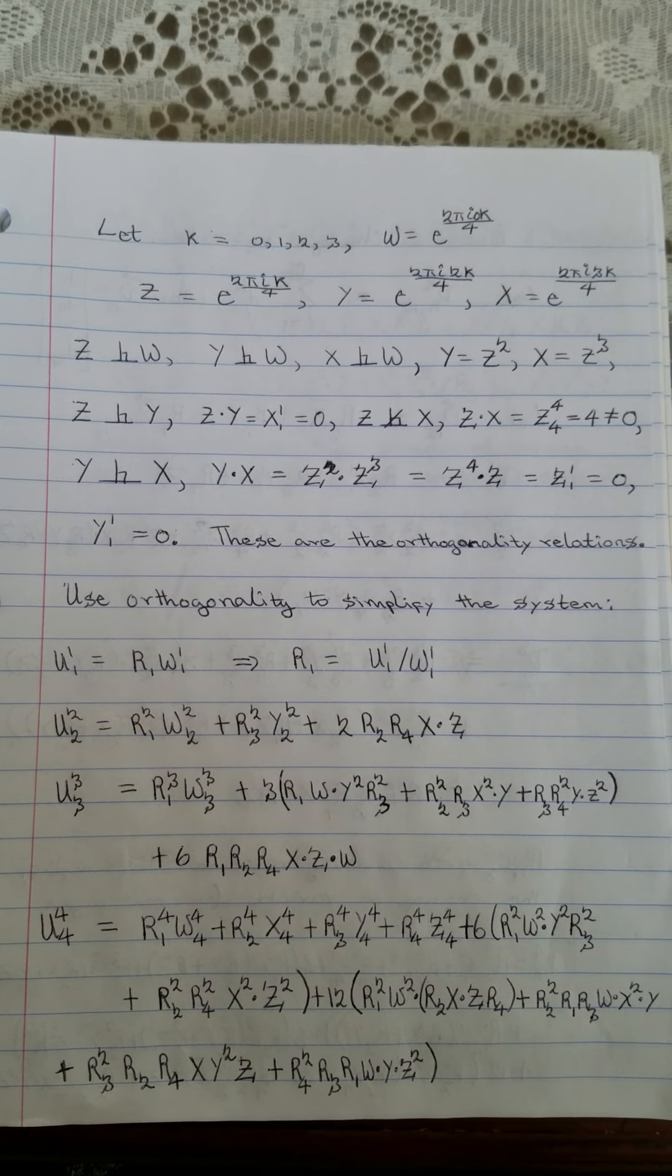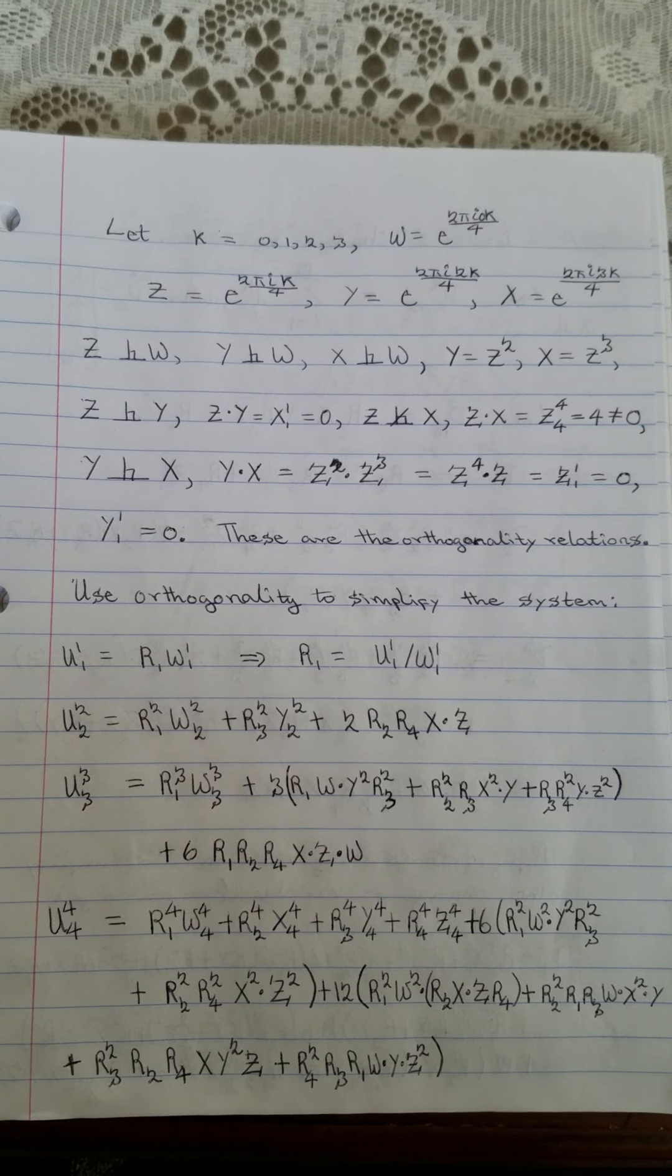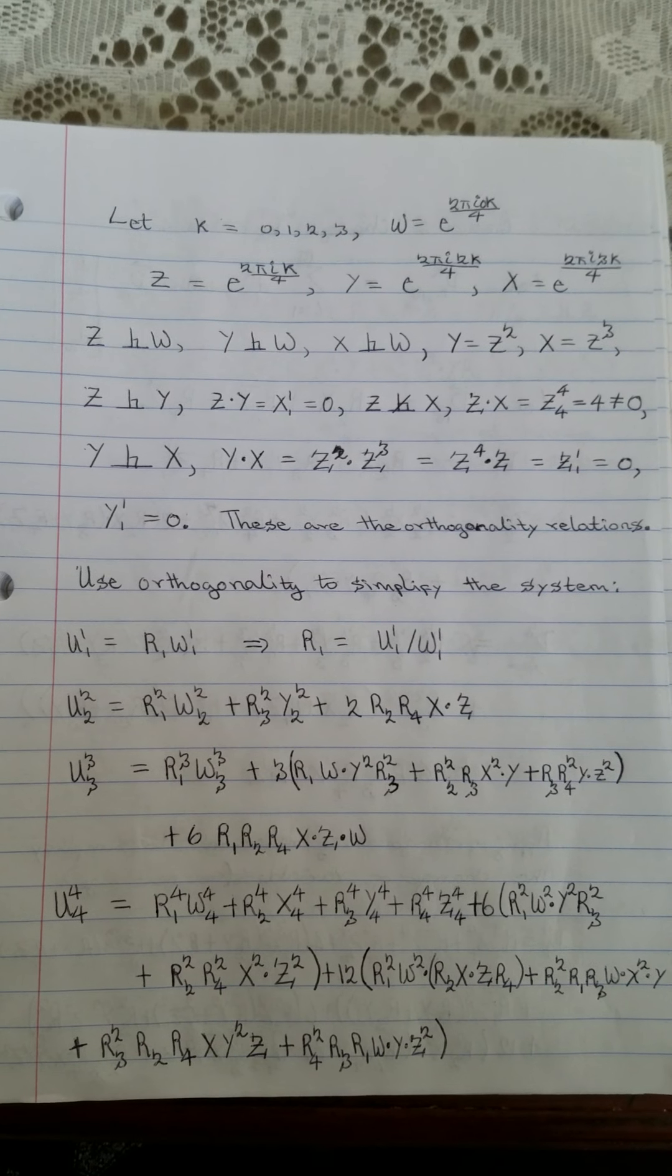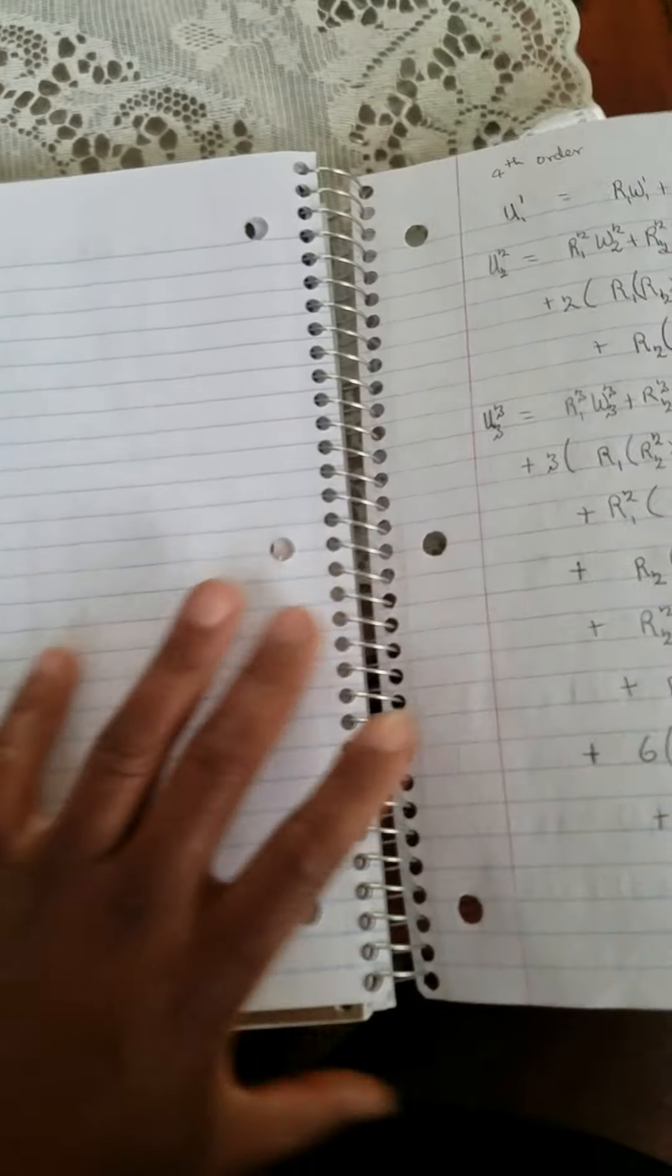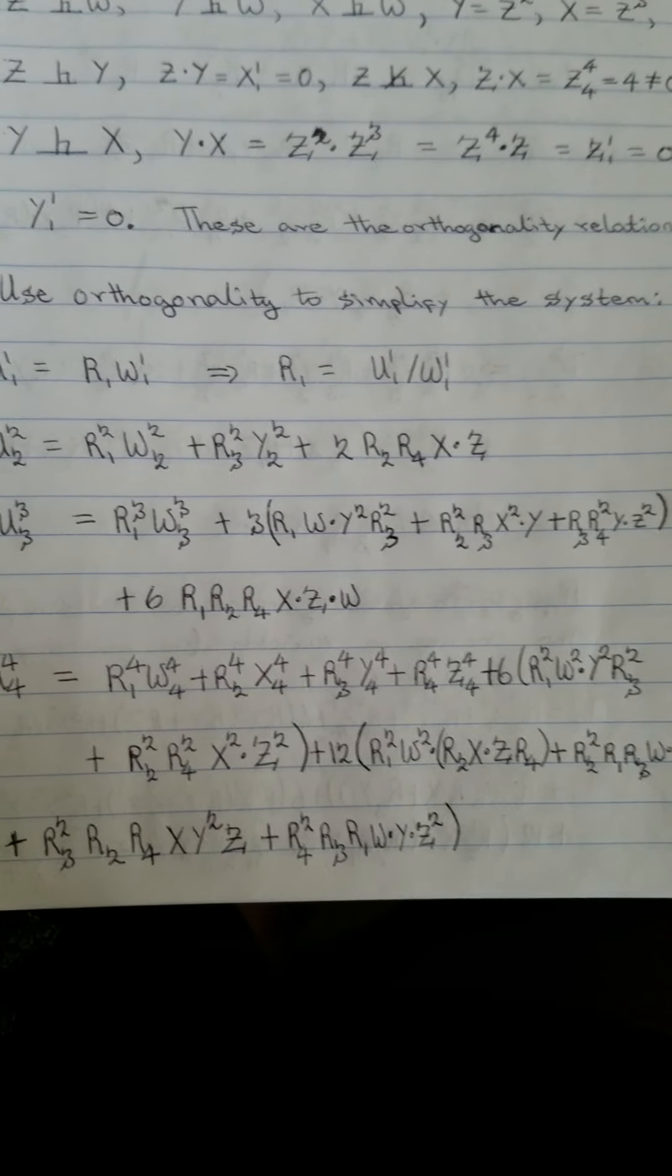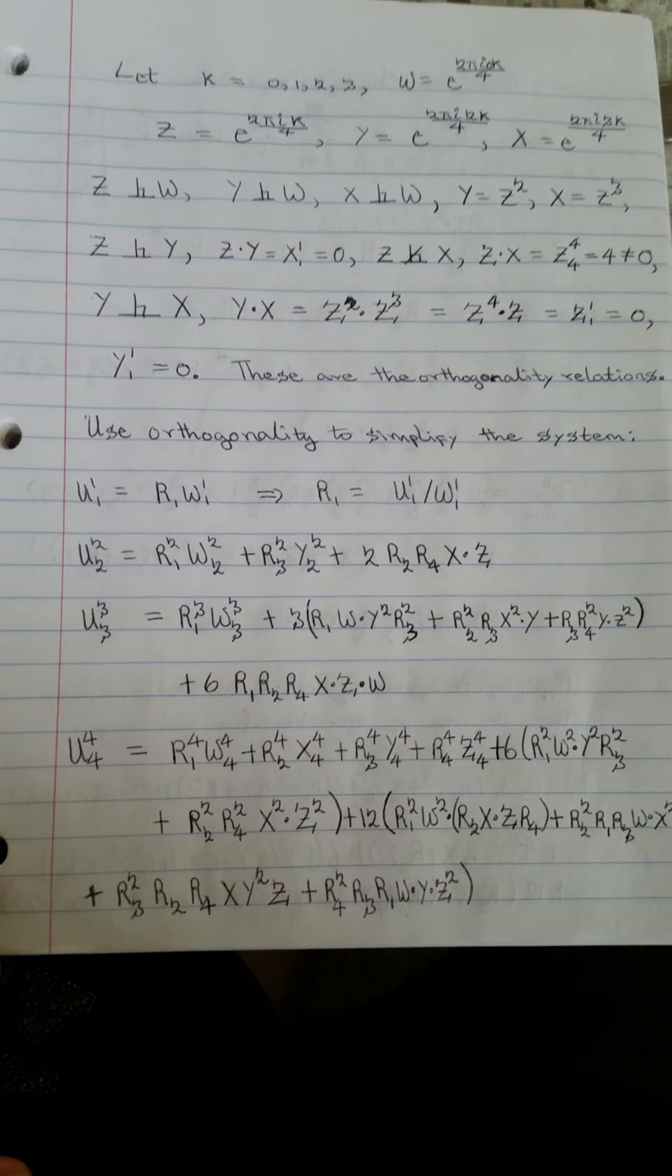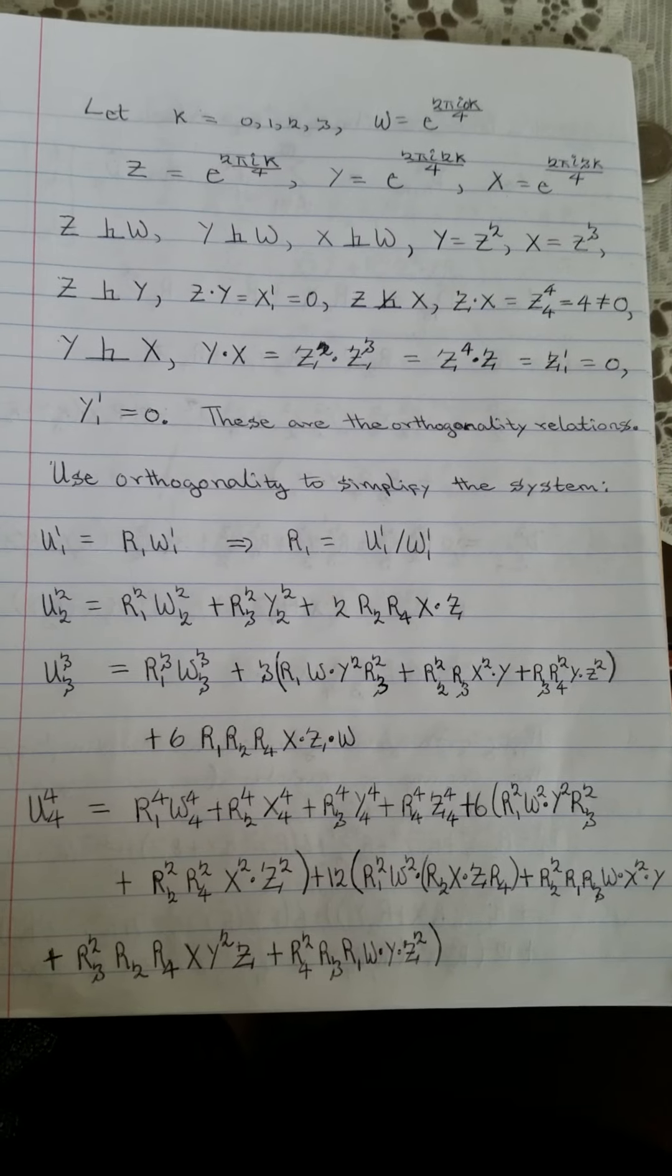When you apply the orthogonality relationships you will get a simplification. Basically the sum of w is zero, the sum of z is zero, likewise for y and likewise for x. That's why u11 only has just one term after simplification. So before simplification we have this for u11, after simplification you get this for u11. Likewise we apply the orthogonality rules and simplify for u22 and for u33, u44.